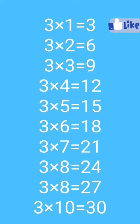3rd Table. 3 1's are 3, 3 2's are 6, 3 3's are 9, 3 4's are 12, 3 5's are 15.